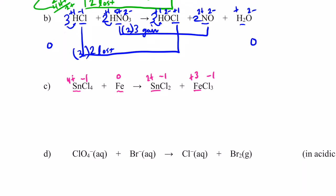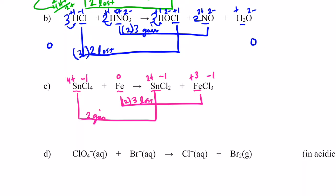Now balance electrons gained with lost. Tin goes from four plus to two plus — two electrons had to be gained. Iron goes from zero to three plus — three electrons had to be lost. Two and three have the number six in common, so I'll double the number of iron species and triple the number of tin species, so electrons gained equal electrons lost. We don't have any ions on either side of the equation, so the ionic charge on both sides is zero — I don't need to add any H pluses or OH minuses. We don't have any hydrogens anywhere, so this equation is now balanced.